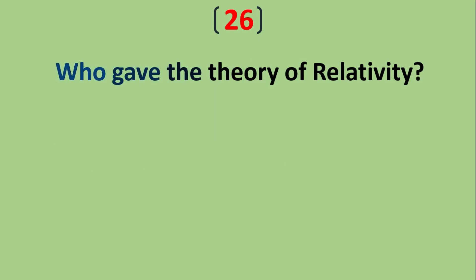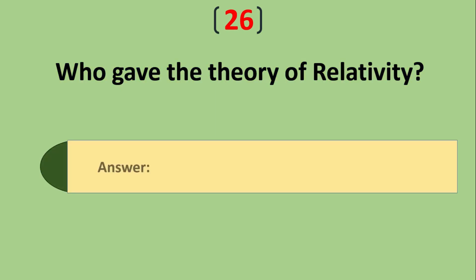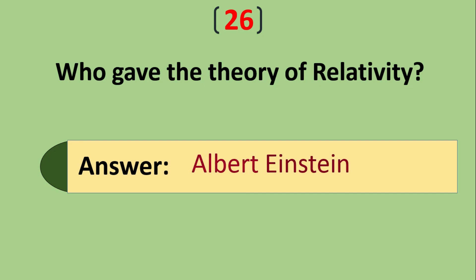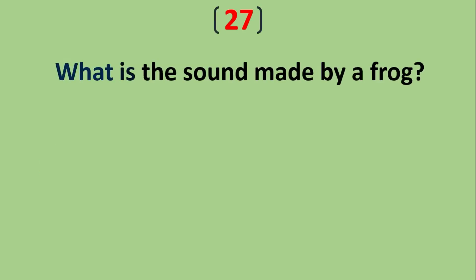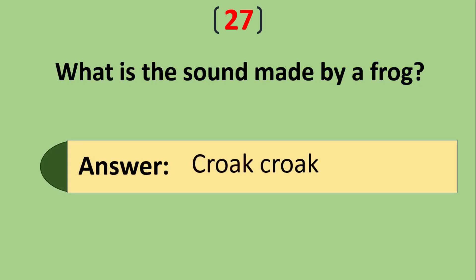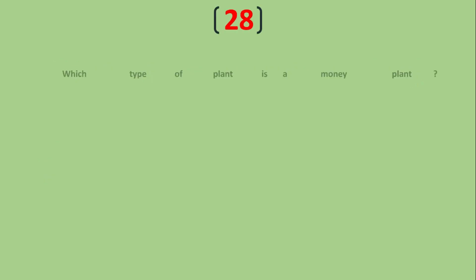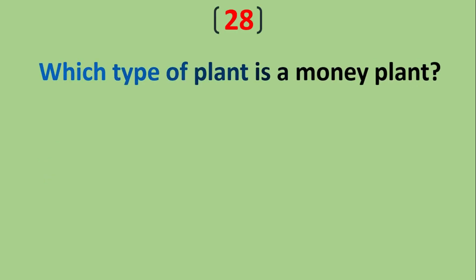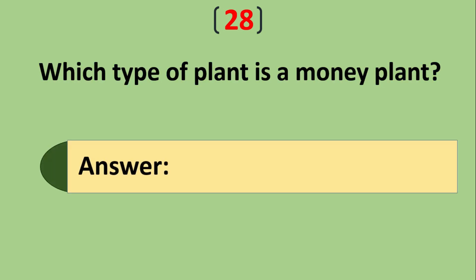Who gave the theory of relativity? Albert Einstein. What is the sound made by a frog? Croak croak. Which type of plant is a money plant? Climbers.